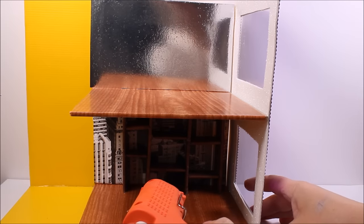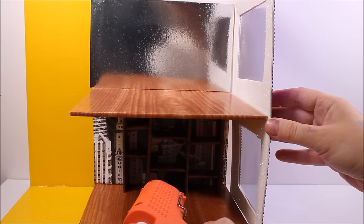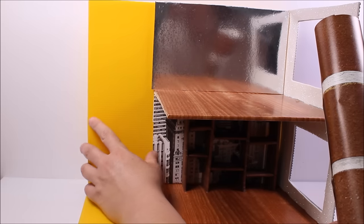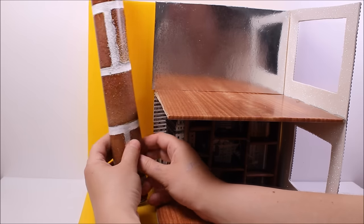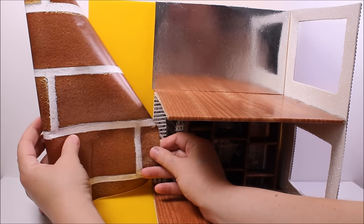So now I'm going to glue this wall to this side of the house. This here is the staircase, and I'm going to cover the wall with this contact paper.